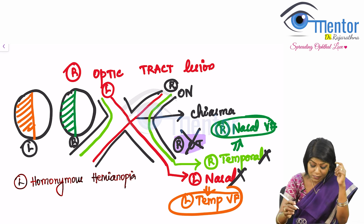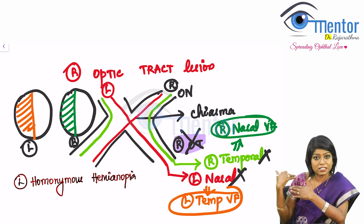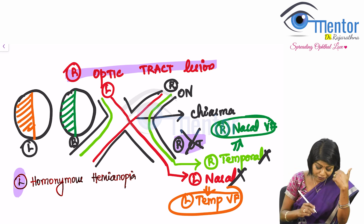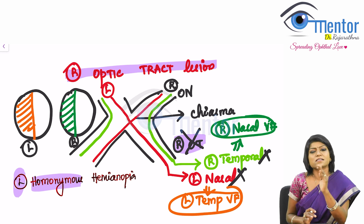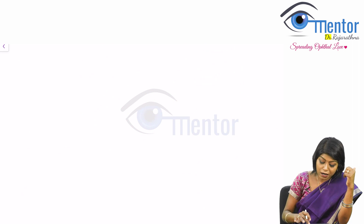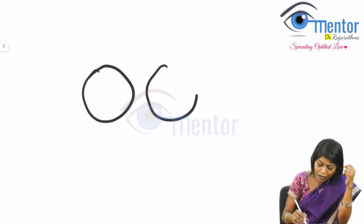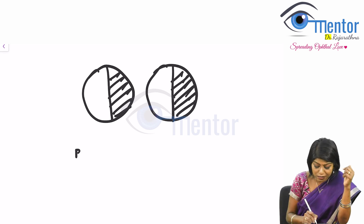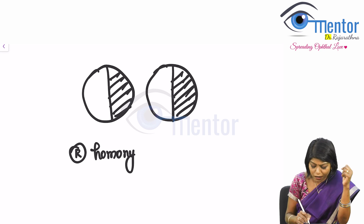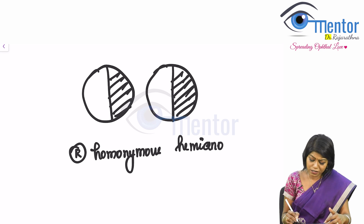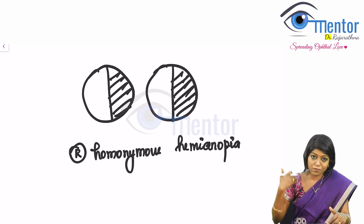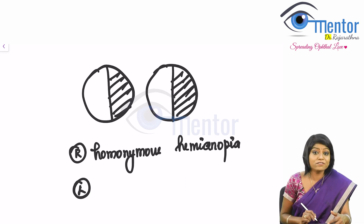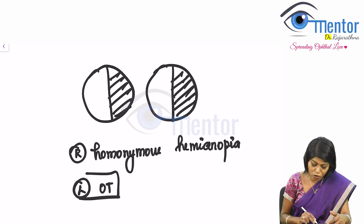Is that clear? So now I'm going to ask you a quick question. I'm giving you a visual field defect image. The visual field defect is right homonymous hemianopia. So automatically you know whenever it is homonymous, it is a retro-chiasmal lesion — somewhere beyond the chiasma. And whenever the visual field defect is on a given side, the lesion is going to be the opposite side. So the lesion is on the left side — the left optic tract.